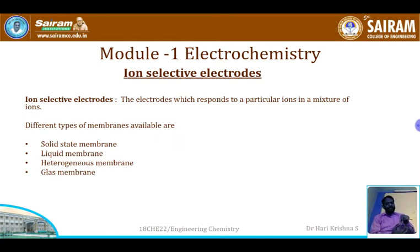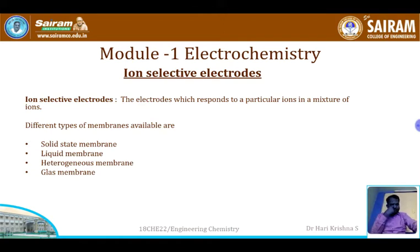The signal from the electrode is directly proportional to the concentration of the specific ion. If fluoride ion concentration is less, the signal will be less; if it is more, the signal will be more. That signal is sent to a meter and we read the concentration.